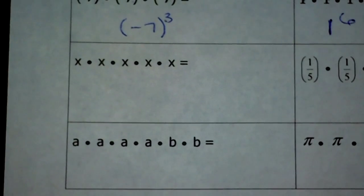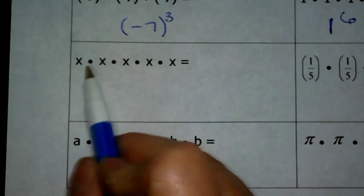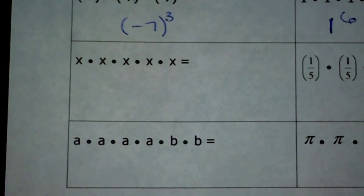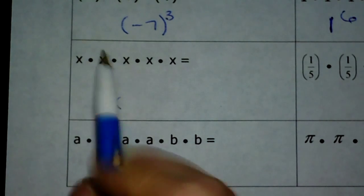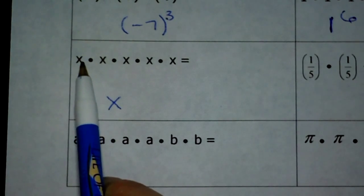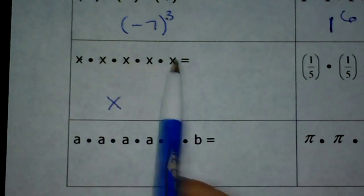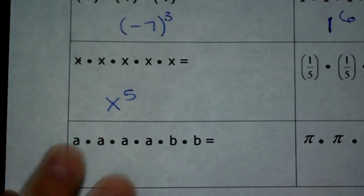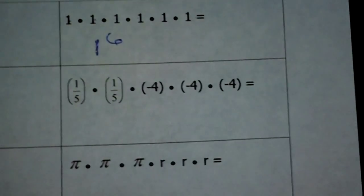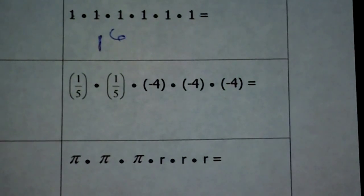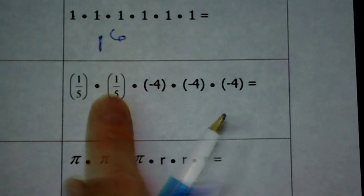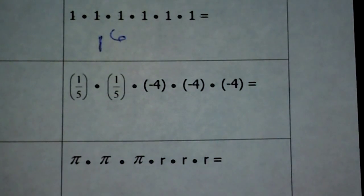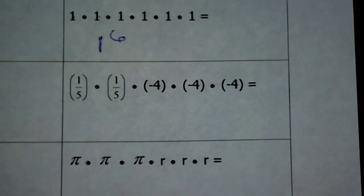Next — yes, letters. It's okay to have letters; they can be factors because X represents something. So X is my base — it's the factor that I'm repeatedly multiplying. And how many X's do we have? 1, 2, 3, 4, 5 X's. Now, this one's a little bit different because there are two different factors. I have this 1/5 two times, and I have 4 three times. It's all multiplication, so you can use exponents to express repeated multiplication.